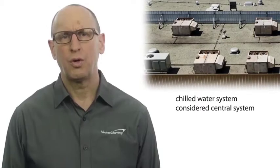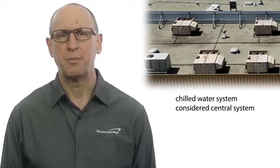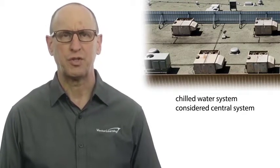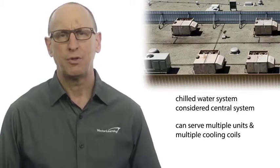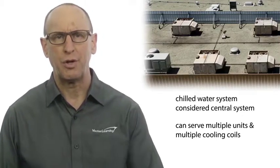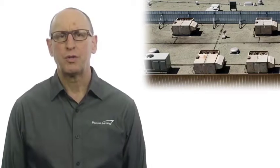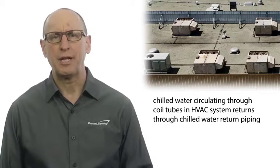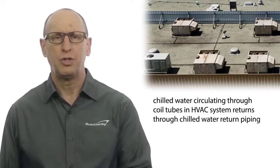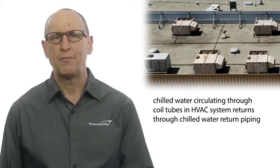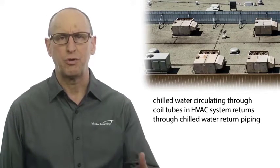If we look at the chilled water system used with an HVAC system, it's also considered a central system, due to the fact that it can serve multiple units and multiple cooling coils distributed throughout the building. For the chilled water system, the chilled water circulating through the coil tubes in an HVAC system returns through chilled water return piping after picking up the heat from the air through the coil.